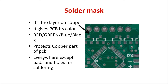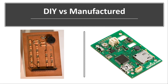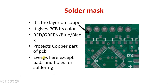Usually, applying a solder mask at home is not feasible because it requires a lot of processes — filming processes under specific machines. So if you are prototyping at home, it is fine to experiment without it. But when you order PCBs from a manufacturer, they will come in a sophisticated format with a solder mask.